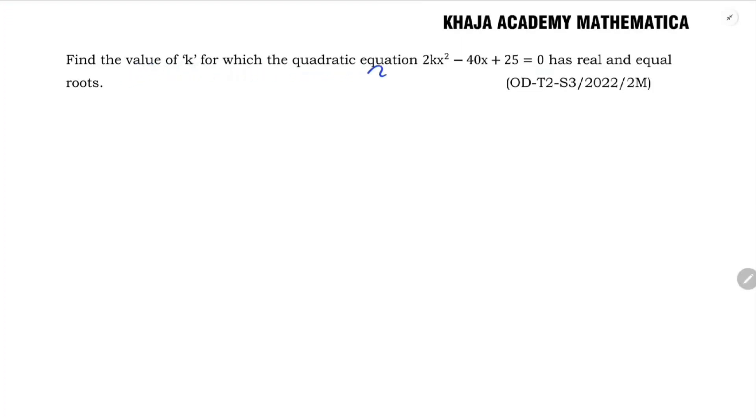Find the value of k for which the quadratic equation has real and equal roots. Here the quadratic equation is 2kx² - 40x + 25 = 0.